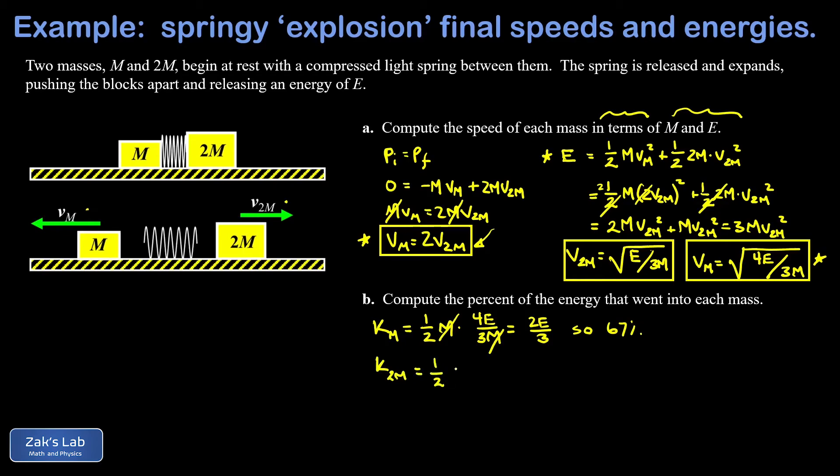If I look at the kinetic energy in the larger mass that's my second term: one half 2m times v2m squared. When I square v2m going back here to my solution for v2m I get E over 3m and I'll go ahead and cancel these twos out in front first. So I end up with m times E over 3m, I cancel my m's and I end up with E over 3. In other words one-third the total energy, so about 33 percent.